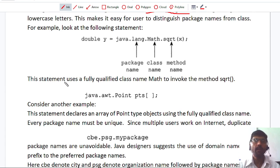This statement uses a fully qualified class name Math to invoke the method square root. Here, the square root is called, which is available in the Math class. This Math class is actually a part of java.lang package.